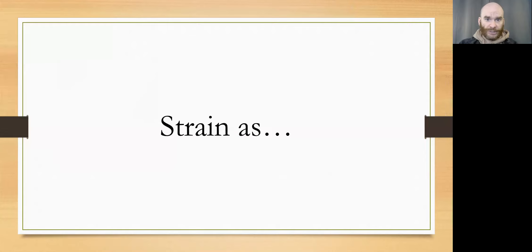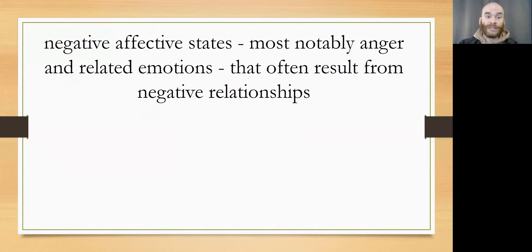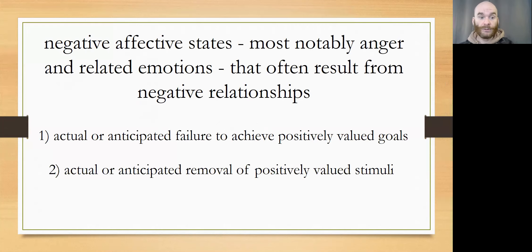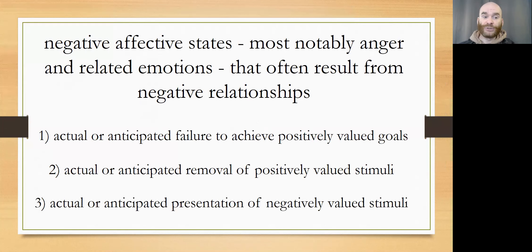To summarize: strain is comprised of negative affective states, most notably anger and related emotions, that often result from negative relationships. The three major sources of strain are the actual or anticipated failure to achieve positively valued goals; actual or anticipated removal of positively valued stimuli; and actual or anticipated presentation of negatively valued stimuli. Don't try to memorize those three phrases — what's much more important is that you get the idea of them rather than memorizing the exact phrasing.